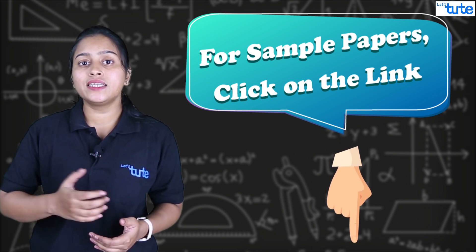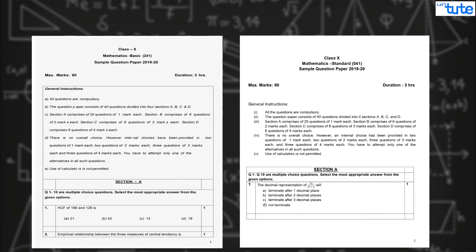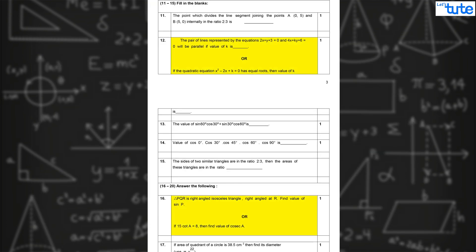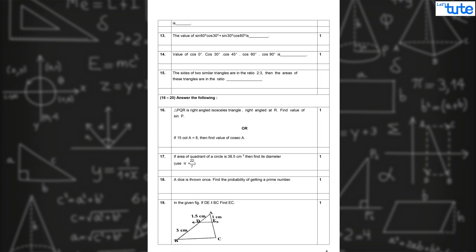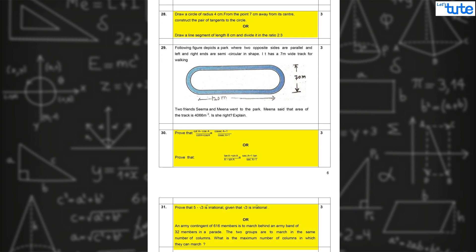Now the question paper will consist of 40 questions divided into four sections A, B, C and D. The paper would be of 80 marks for which you will get three hours to complete. There will be no overall choices, however an internal choice will be provided in two questions of section A, similarly in two questions for section B and three questions for section C.